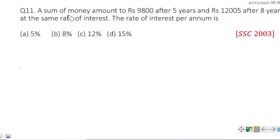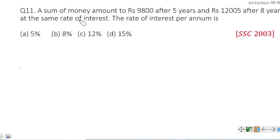A sum of money amounts to ₹9800 after 5 years and ₹12005 after 8 years at the same rate of interest. Find the rate of interest per annum.